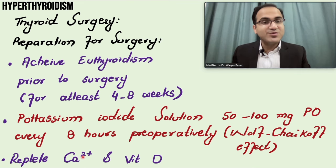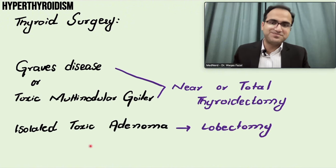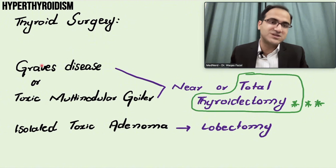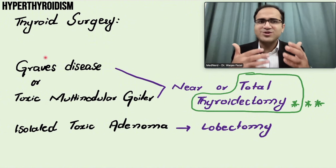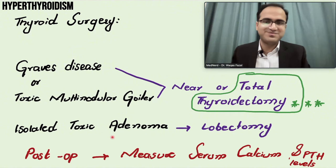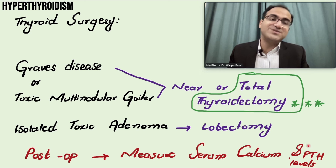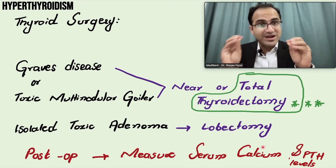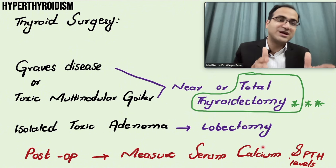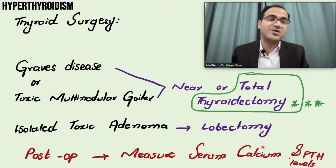During thyroid surgery, there is a chance of accidentally removing the parathyroid glands, so calcium and vitamin D are replaced post-operatively. For Graves' disease and toxic multinodular goiter, near-total or total thyroidectomy is the preferred surgical option. For an isolated toxic adenoma, you can remove just the lobe containing it. Post-operatively, measure serum calcium and PTH levels because hypocalcemia and hypoparathyroidism are significant risks.